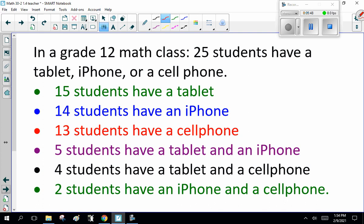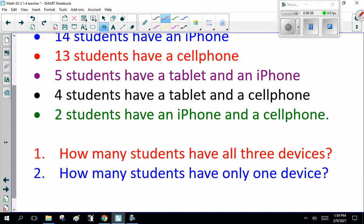Let's just do an example that will be easier. In the grade 12 math class, 25 students have a tablet, iPhone, or cell phone. 15 students have a tablet, 14 students have an iPhone, 13 students have a cell phone. Five students have a tablet and an iPhone, four students have a tablet and a cell phone, and two students have an iPhone and a cell phone. The question is, how many students have all three devices, and how many students have only one device?